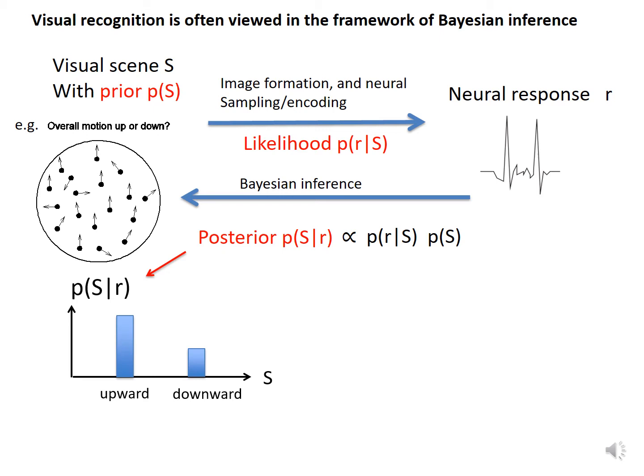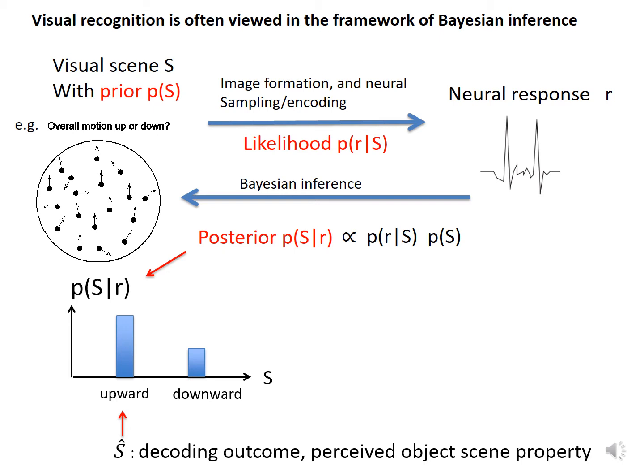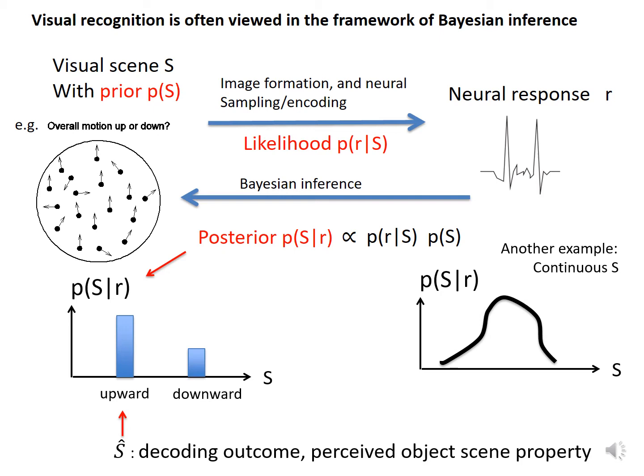For example, this can be a posterior distribution over two possible S values: upward or downward motion direction. Since the probability is higher for upward motion, the decoding outcome S-hat is the upward motion direction, and this is the motion direction perceived. In another example, the posterior distribution is over a continuous variable — for instance, S can be the orientation of an object taking all possible orientation values within the range. The perceived orientation is the value at the peak of the distribution.